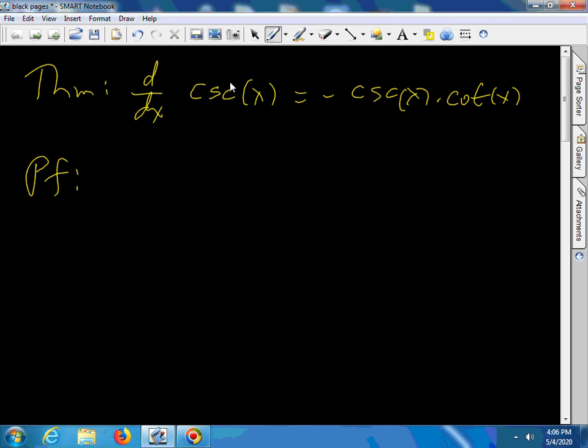We are going to prove that the derivative of cosecant of x is negative cosecant of x times cotangent of x. Let's get on to the proof.